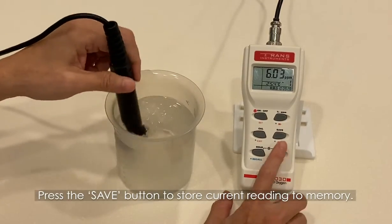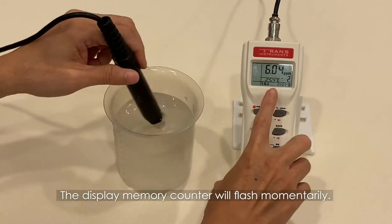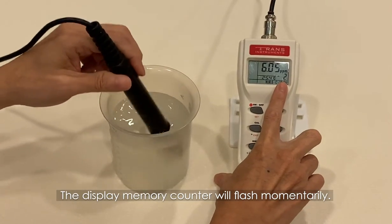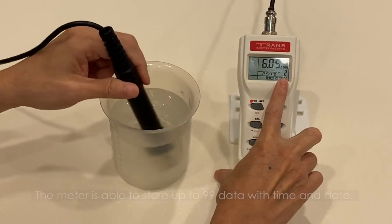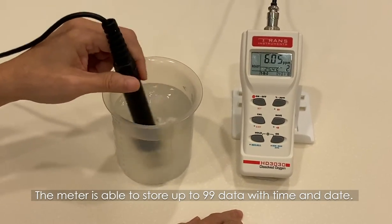Press the save button to store current reading to memory. The display memory counter will flash momentarily. The meter is able to store up to 99 data with time and date.